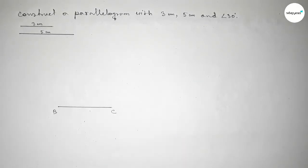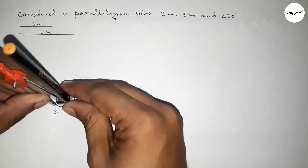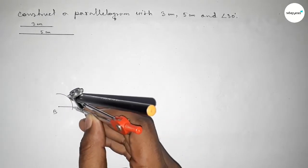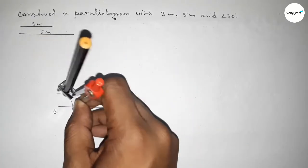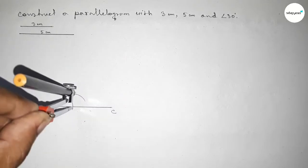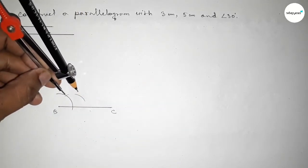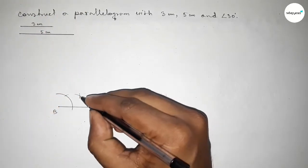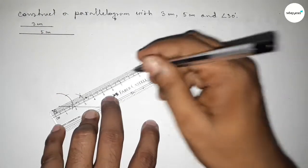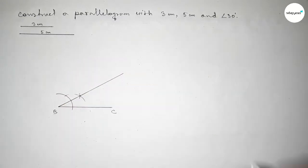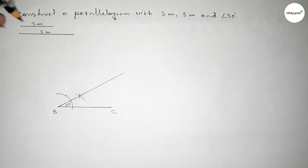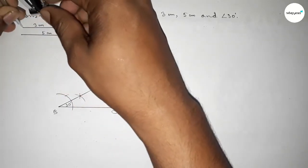Next, drawing a 30 degree angle at point B. Taking any length and drawing an arc, then putting the compass with the same length and cutting here, drawing another arc. Putting the compass with the same length and cutting again so both curves intersect at a point. Joining this gives us 30 degrees, so this is a 30 degree angle.